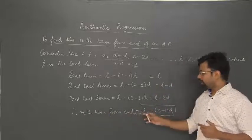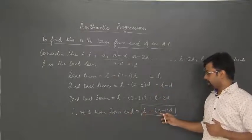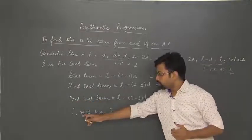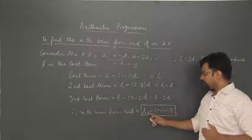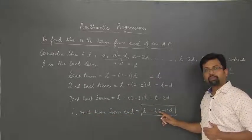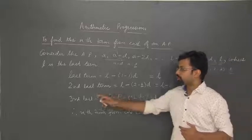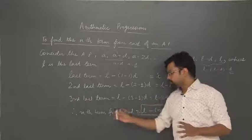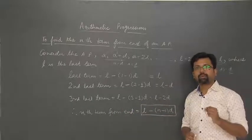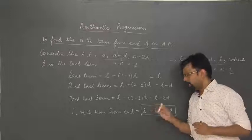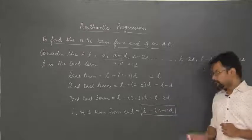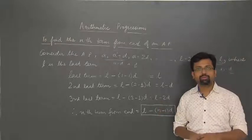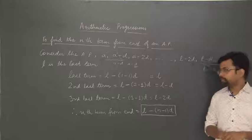The nth term from the end will be L minus (N minus 1) into D. For example, the third last term from the end is L minus (3 minus 1) into D. Similarly, we can find any term from the end using this formula L minus (N minus 1) into D, where L is the last term of the given AP, D is the common difference, and N is the nth term we need to find out.